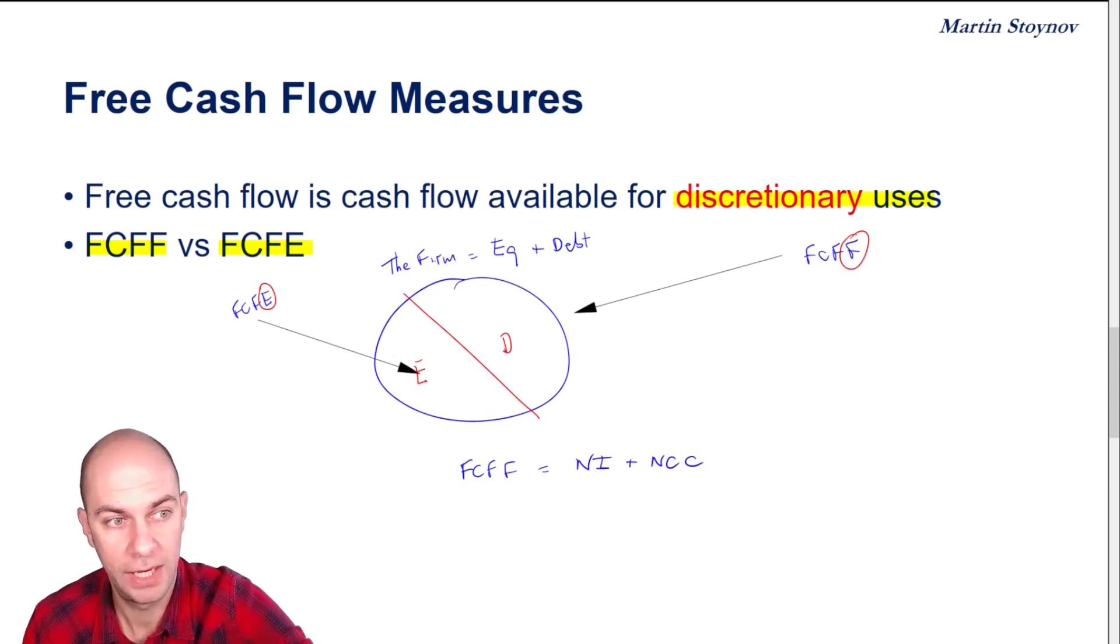So remember here, what are my three non-cash charges? Remember the rule of three that Martin always talks about. So my non-cash charges are depreciation and amortization, gains and losses, and changes in deferred taxes. So these are my three non-cash charges.